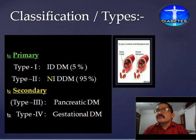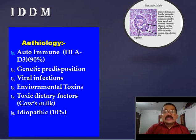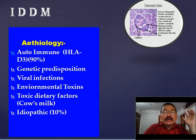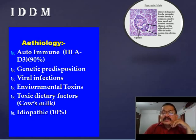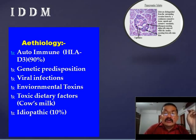So the etiology of IDDM may be: autoimmune in about 90% of patients, then genetic predisposition, viral infections, environmental toxins, toxic dietary factors, and purely idiopathic — which constitutes about 10% of IDDM patients.